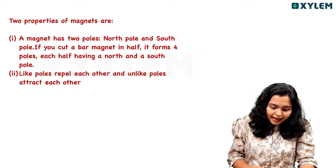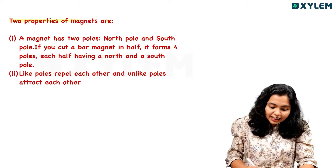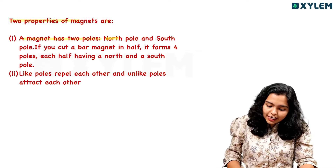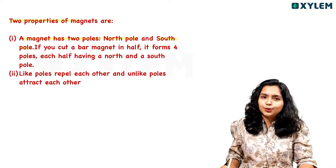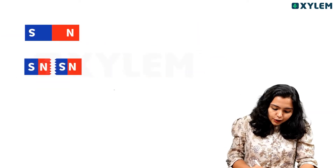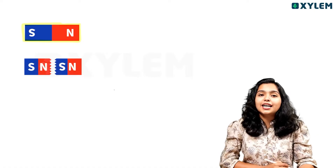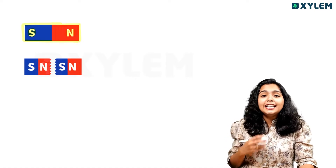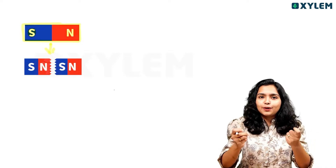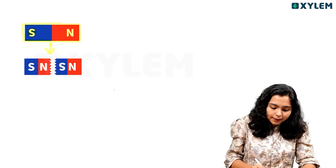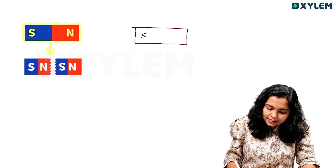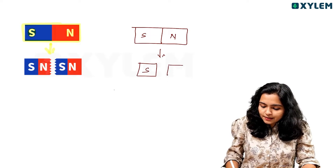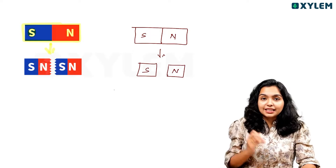The two properties of a magnet: the first property is that a magnet has two poles — a South Pole and a North Pole. These are present at the ends of the magnet.